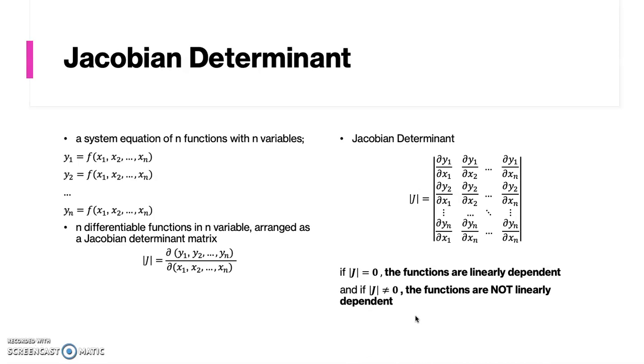But if the Jacobian determinant is not equal to 0, then the system of equation is linearly independent.